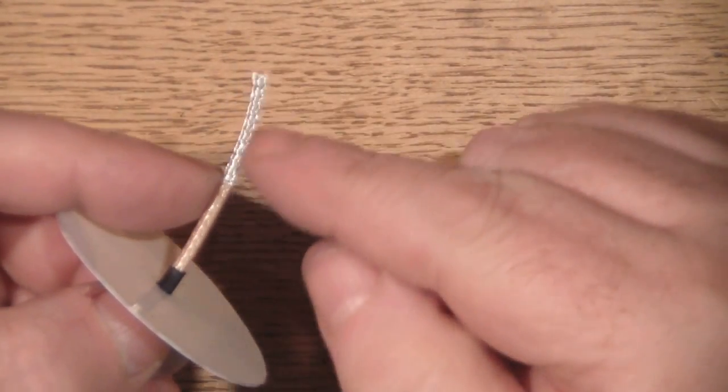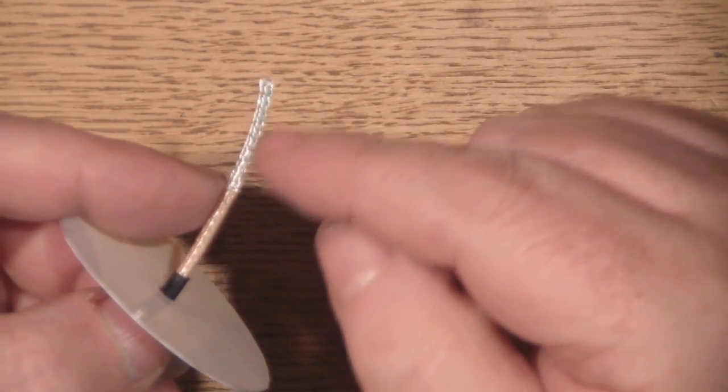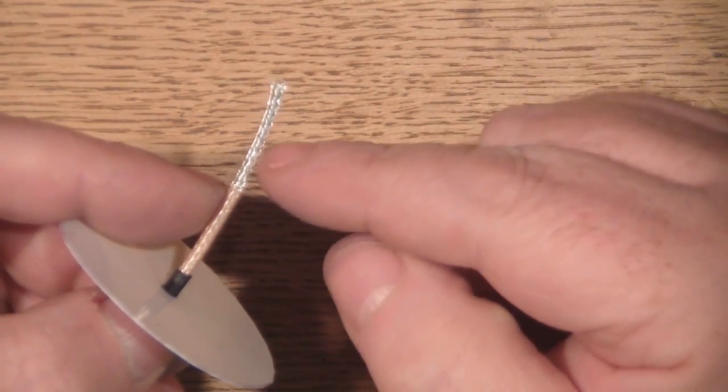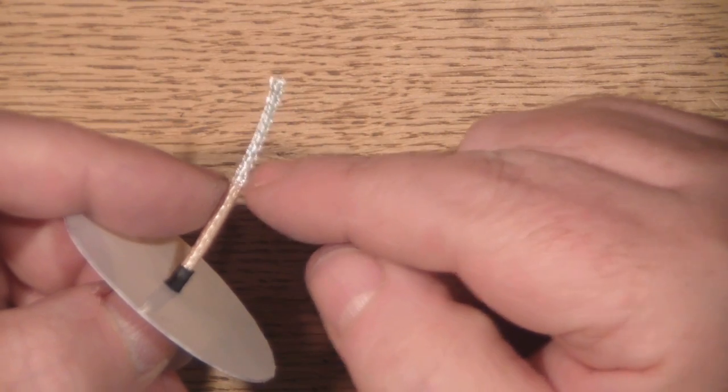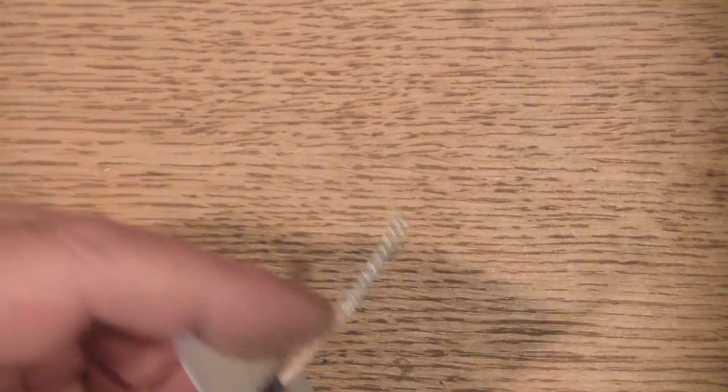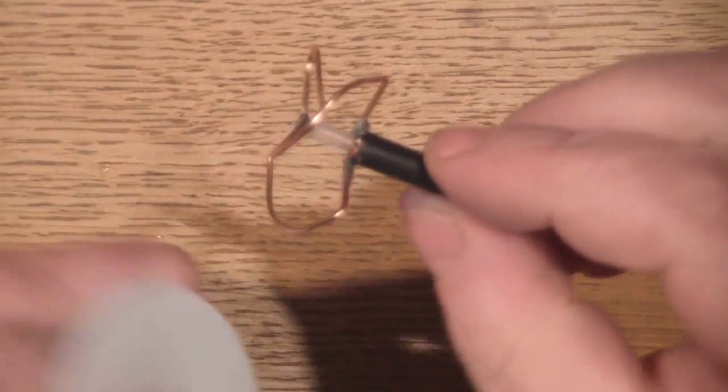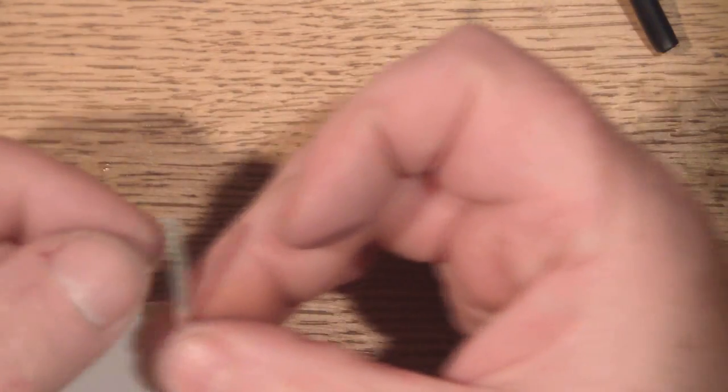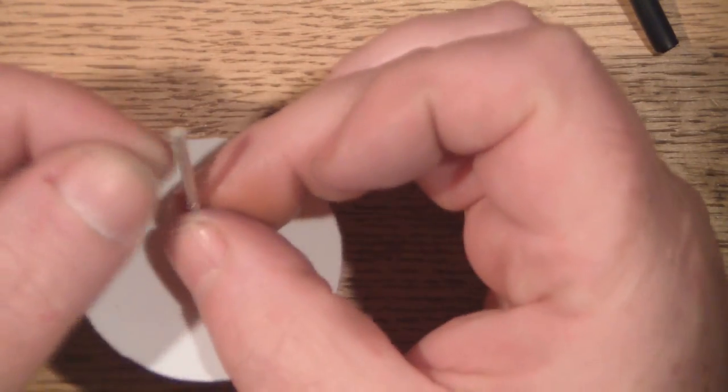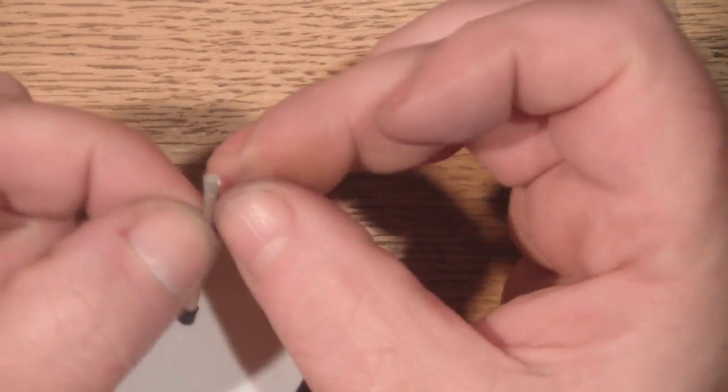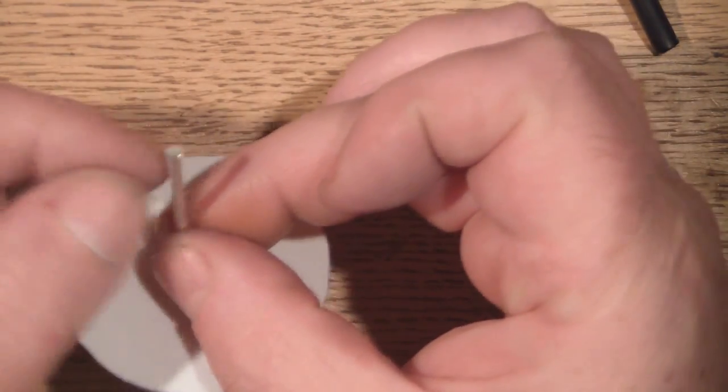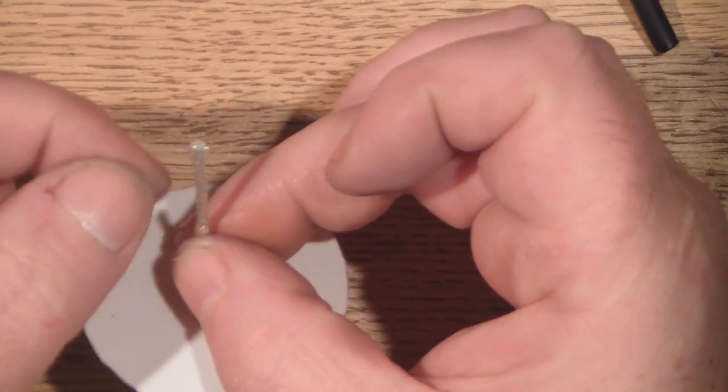I've cut back and exposed 20 millimeters of the outer copper braid here. I've done 20 millimeters because I want a 10 millimeter gap between the actual elements. You can see that center core is roughly 10 millimeters. Now I want to actually separate the braids.